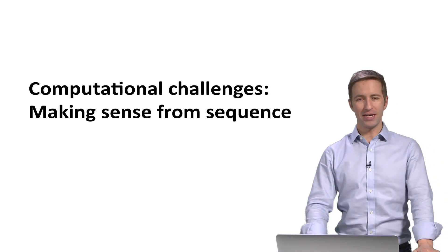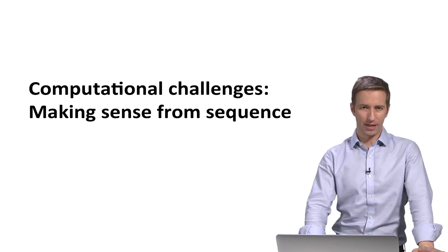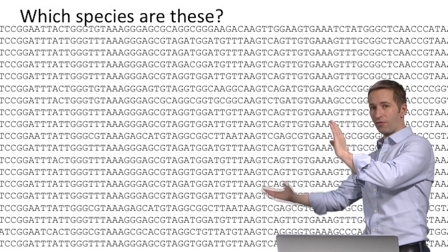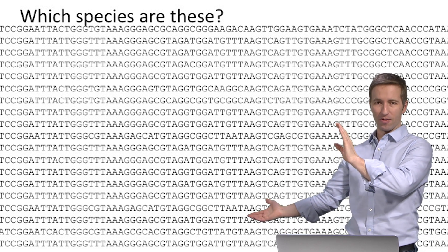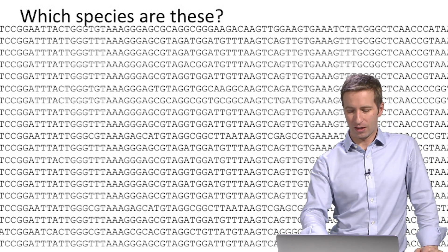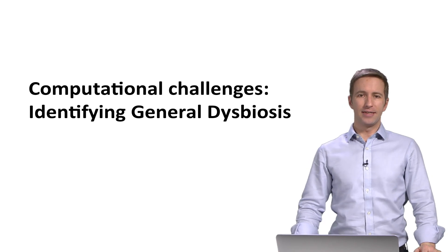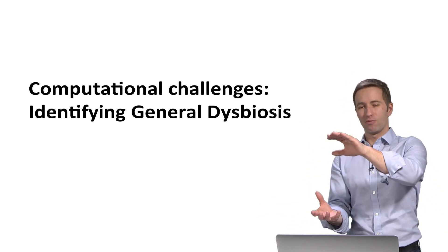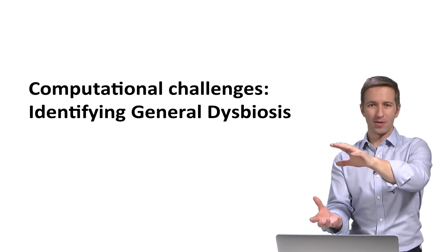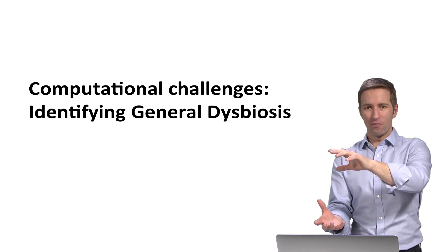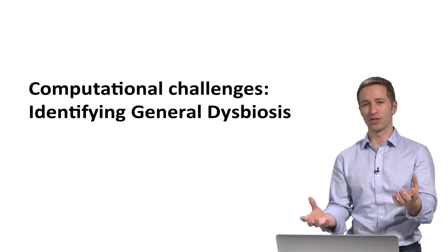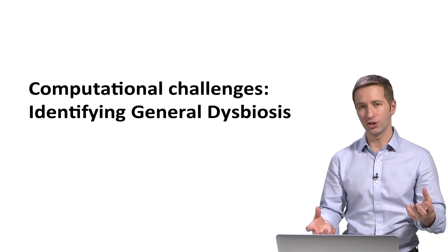The first challenge is making sense from the raw sequence data. The main questions we'll be asking here are: given a large data file of DNA sequences from a microbiome, what species are there, what genes do they have, and what functions might they have? The next challenge is taking the output from that — where we know what species are there or what genes they have — and figuring out what is a healthy microbiome. I'll be discussing clinical applications in this course, but you can also think of healthy in terms of other ecosystems like what's healthy in the ocean or what's healthy in soil.